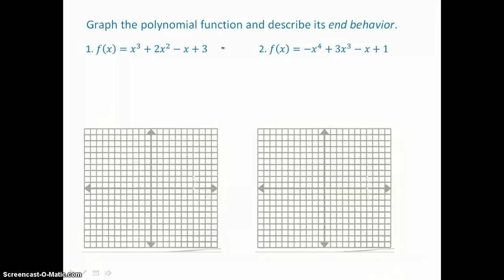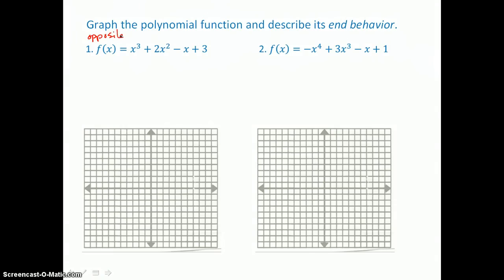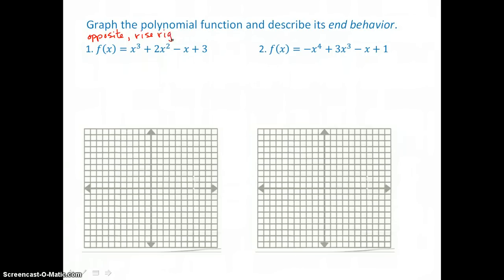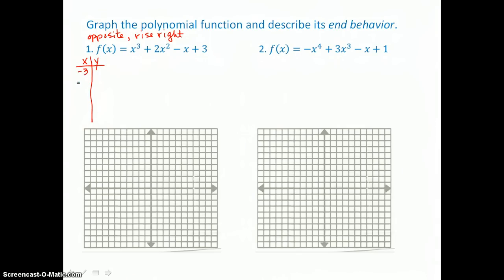Here are two more examples. The first one is a cubic. Because it's odd degree, we know it has opposite behavior left and right. And because our leading coefficient is positive, we know it's going to rise to the right. So we make a table of values to find the middle portion of this graph. I'm going to let x equal negative 3, negative 2, negative 1, 0, and 1.